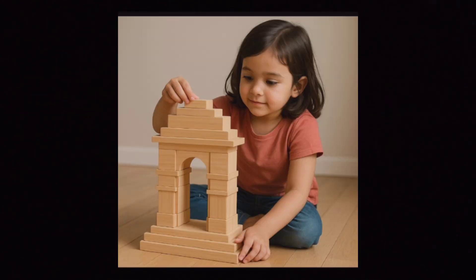After she is back from Delhi, she makes a model of India Gate using her wooden blocks and a picture is given with the girl sitting with the wooden blocks.